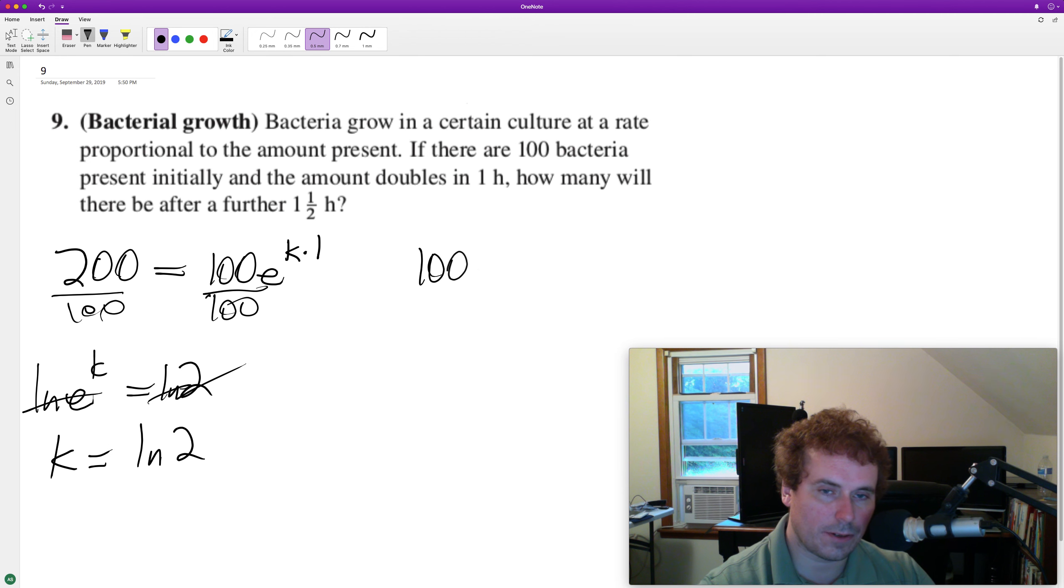Now that we know that, we can set 100e raised to the k, which is natural log of 2, times t, which is going to be 2.5 hours. What we get approximately is 565.6 or 565.7 bacteria, but bacteria are whole so we'll just make it 566.